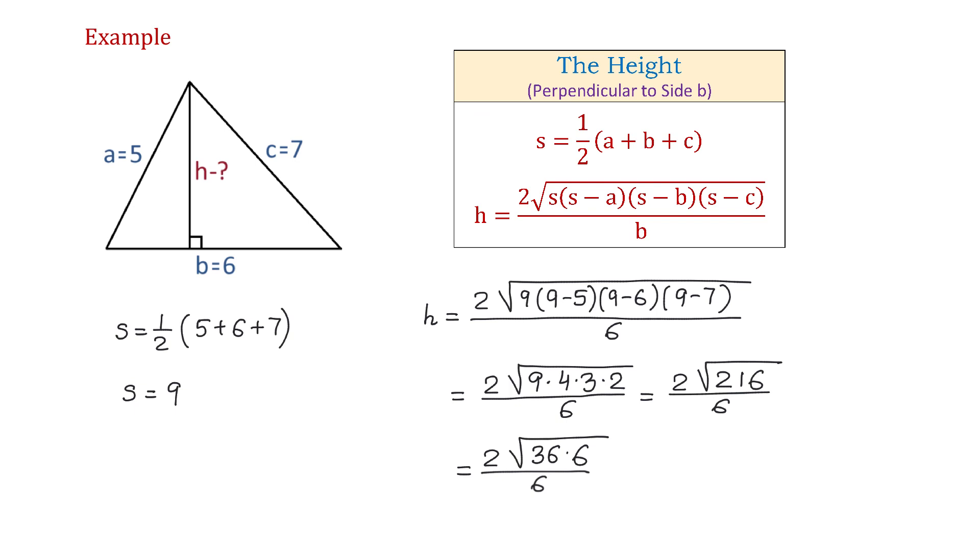Then, square root of 36 is 6. So now we will have 2 times 6 square root of 6 over 6. And 6 and 6 will cancel. Then, the height will be 2 square root of 6, which is approximately 4.9 units.